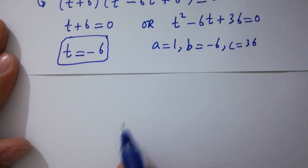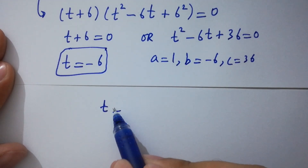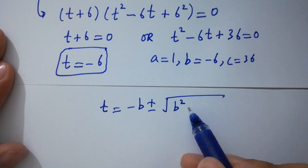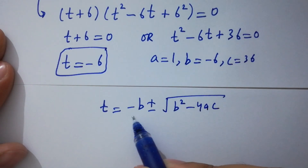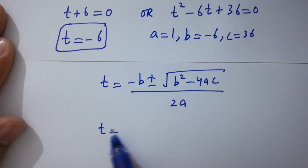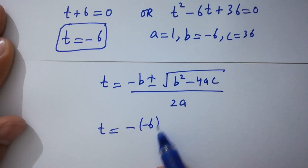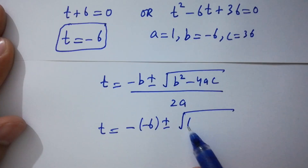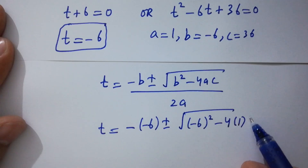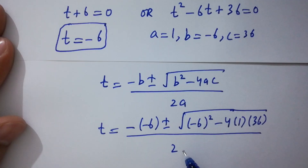The quadratic formula gives T = (-B ± √(B² - 4AC)) / 2A. Substituting B = -6, A = 1, C = 36, we get T = (6 ± √(36 - 144)) / 2.